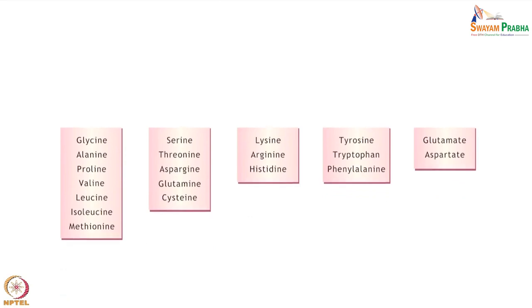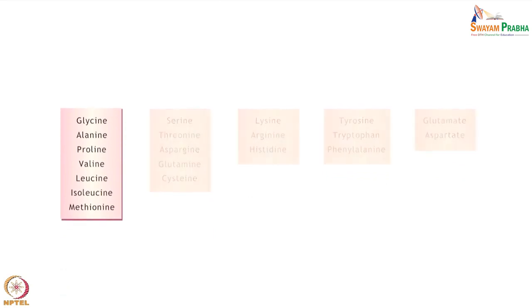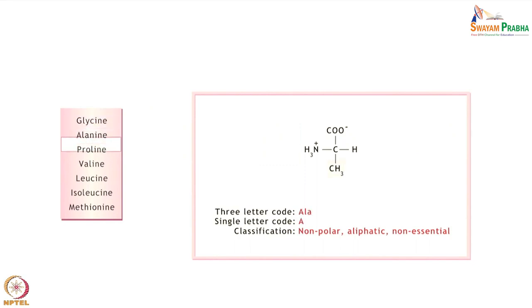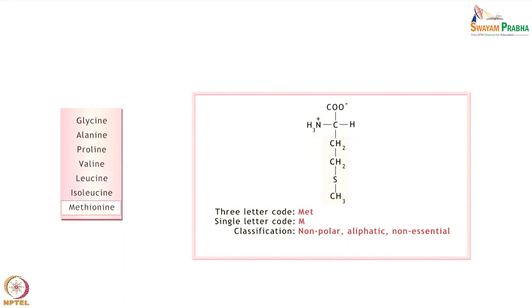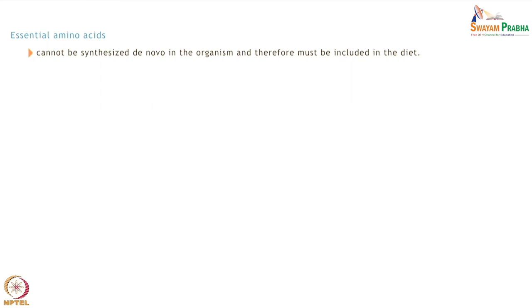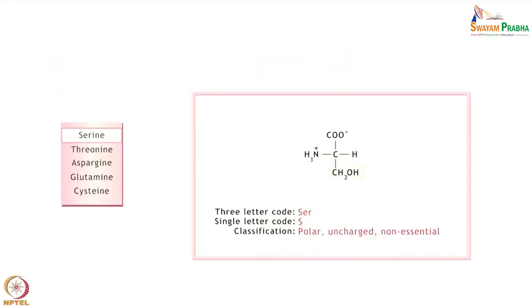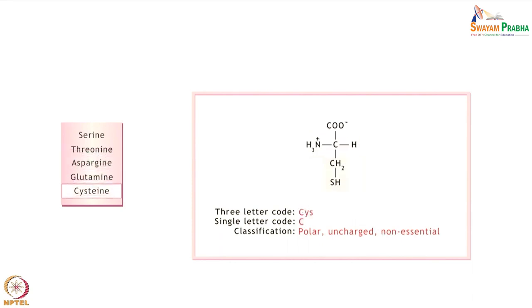Amino acids having non-polar aliphatic side chains include glycine, alanine, proline, valine, leucine, isoleucine, and methionine. Essential amino acids are those that cannot be synthesized de novo in the organism and therefore must be included in the diet. Non-essential amino acids on the other hand can be synthesized from various precursors. Serine, threonine, asparagine, glutamine, and cysteine consist of polar but uncharged side chains.